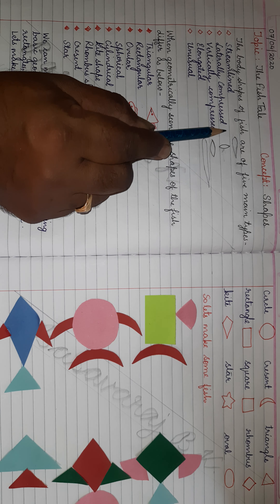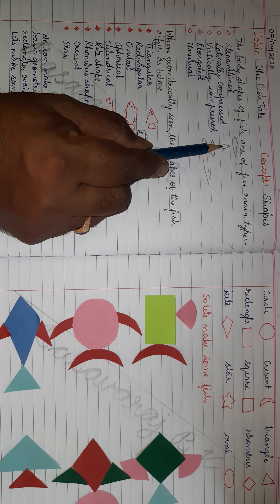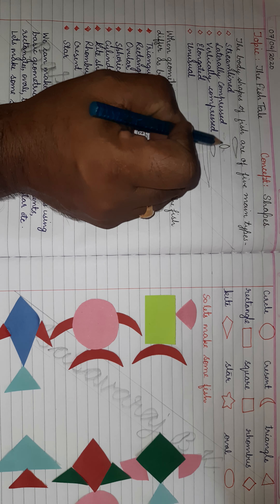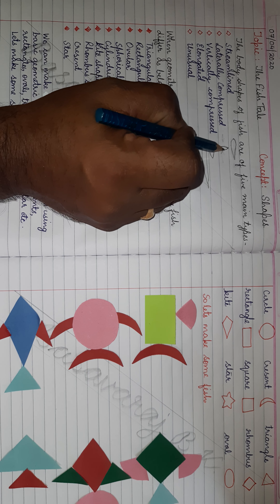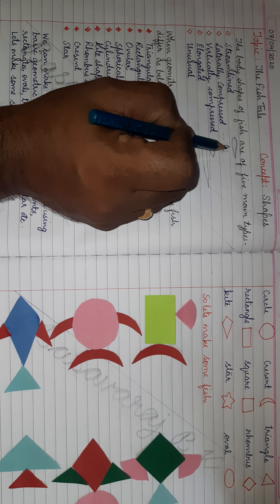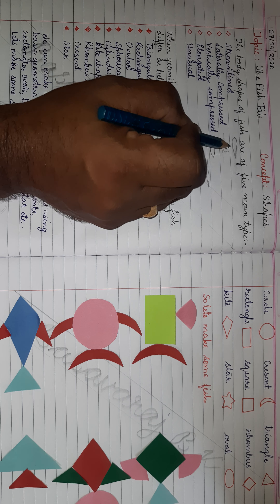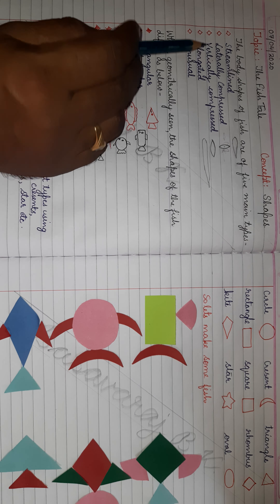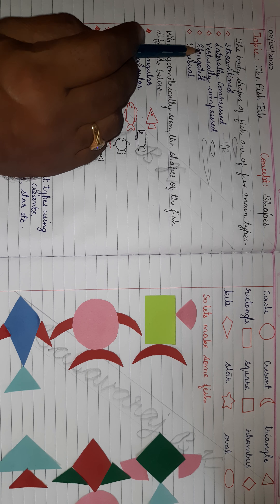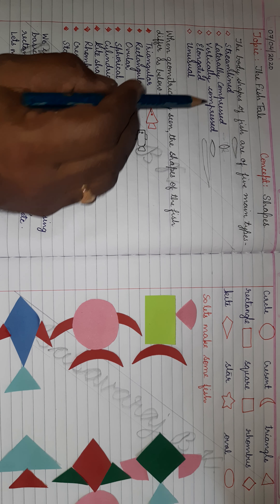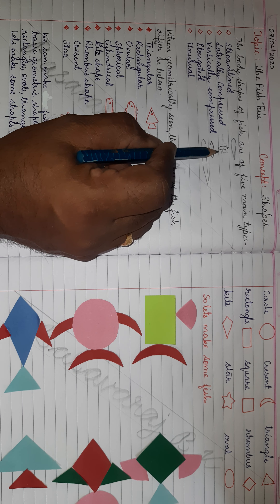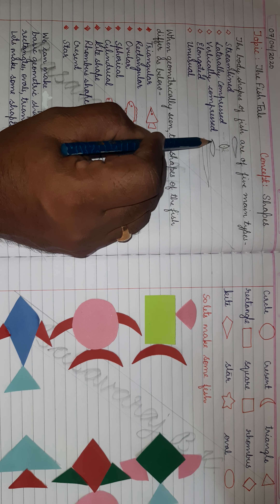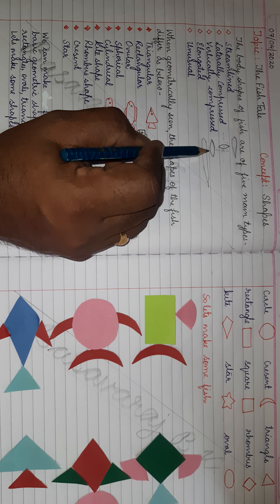Some fishes are laterally compressed. Laterally means from sides, and compressed means pressed — so pressed by their sides. You can see some fishes are of this shape where their mouth will be here and their fins will be here and tail somewhere behind it. So they are laterally compressed.